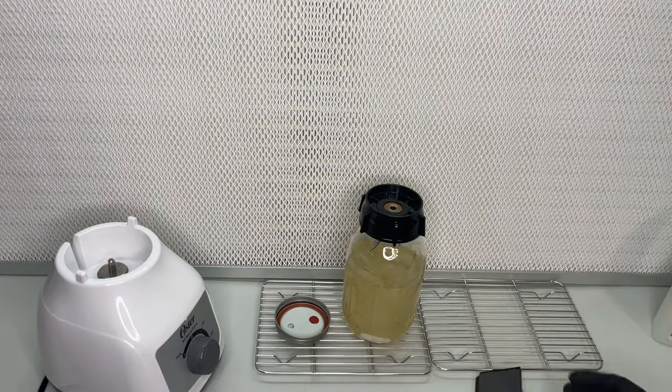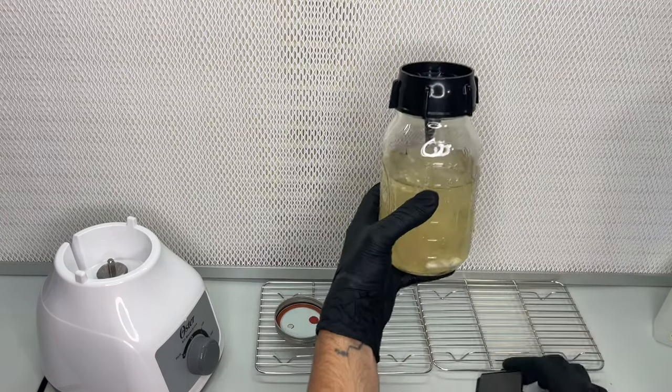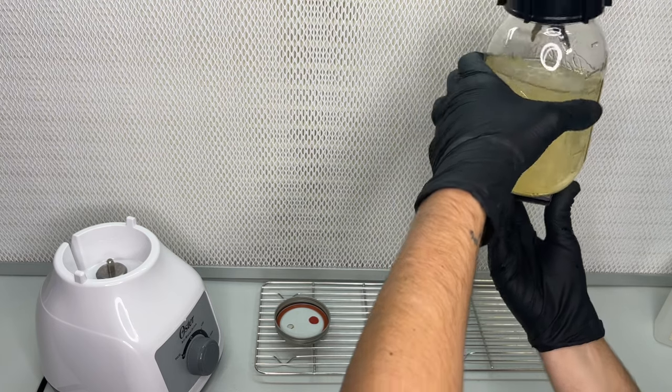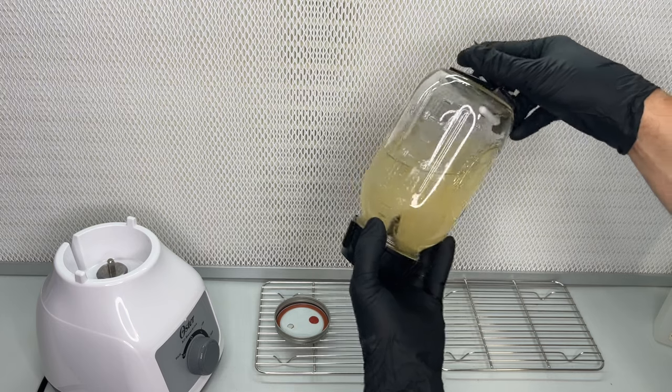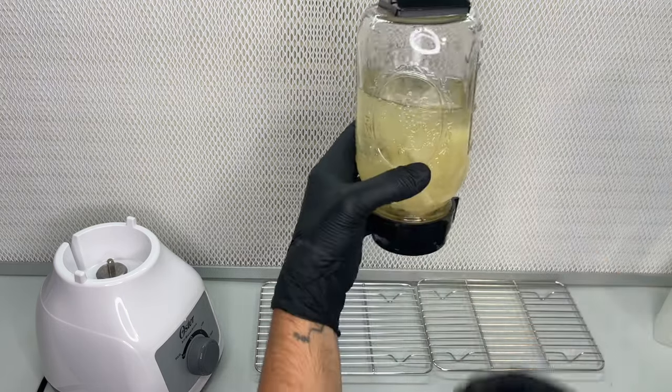To prevent the magnetic stir bar from being chopped up by the blade, I'm going to use a magnet to hold it to the bottom of the jar while it is flipped upside down. The magnet does a pretty good job and I'm glad that I had one laying around or else I wouldn't have been able to blend this jar.